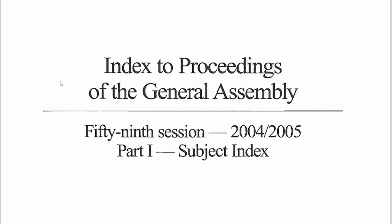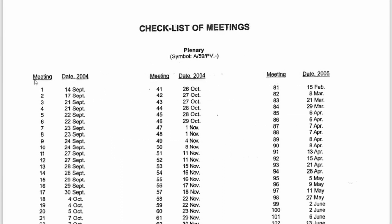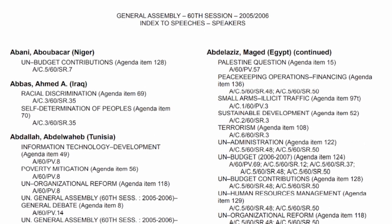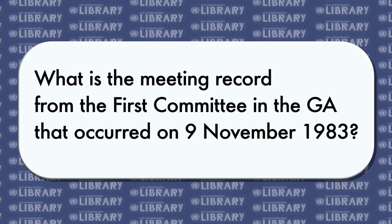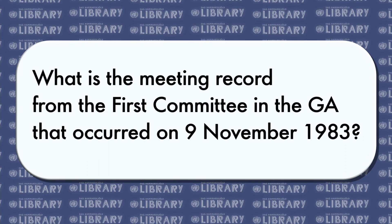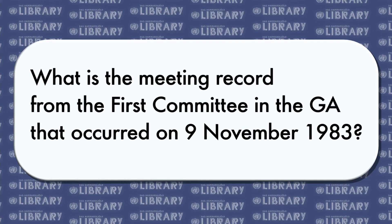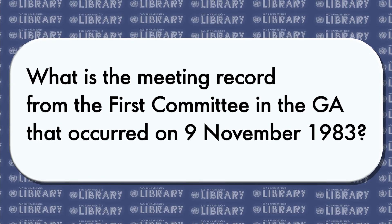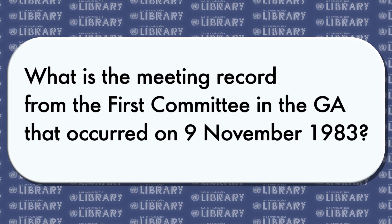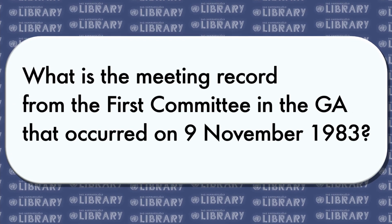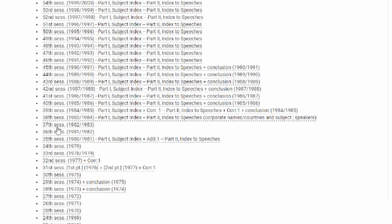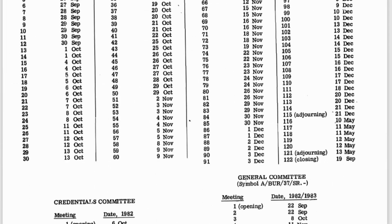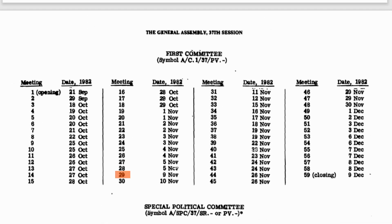For this video, we're focusing mainly on the checklist of meetings, the subject index, and the index to speeches. For our first example, let's say you're looking for a meeting record in 1983 from the first committee of the GA that took place on November 9th. It can be difficult to know what the meeting record number was on that day. However, a quick scan of the 37th session's checklist of meetings shows us that the 29th meeting falls on the date in question.